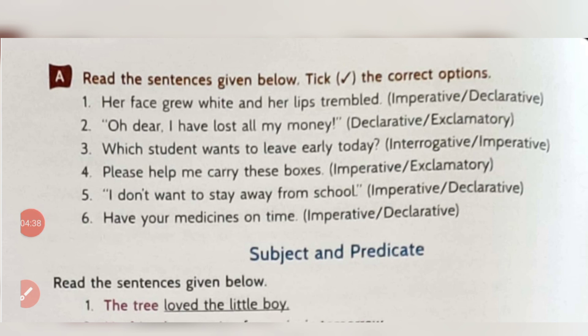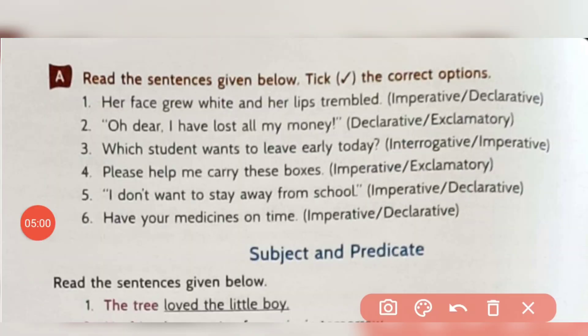Move to page number 16, question A: read the sentences and take the correct options — identify which kind of sentence each is. First — 'Her face grew white and her lips trembled' — this is a declarative sentence. Second — 'Oh dear, I have lost all my money!' — this is exclamatory because an exclamation mark is given. Third — 'Which student wants to leave early today?' — a question mark is given, so it is interrogative.